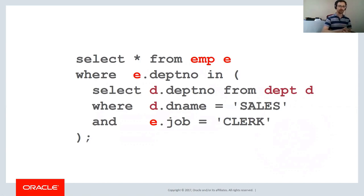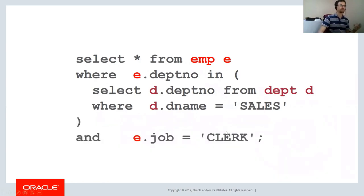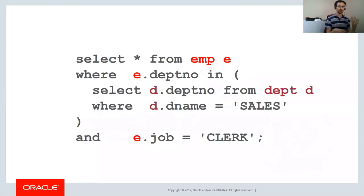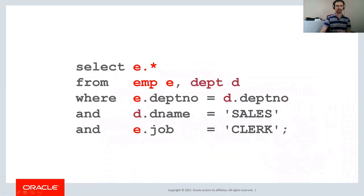Even though the filter is in the subquery, it's still filtering against the parent table — employees. So the fact that it's in the subquery is kind of irrelevant. It's basically the same as taking it out and putting it in a standard WHERE clause. We can go further: we know there is a one-to-one relationship between employees and departments — each employee links to at most one department. So we can actually transform this into a straightforward join on the two tables, selecting just the employee columns. This is in fact what Oracle's optimizer does.